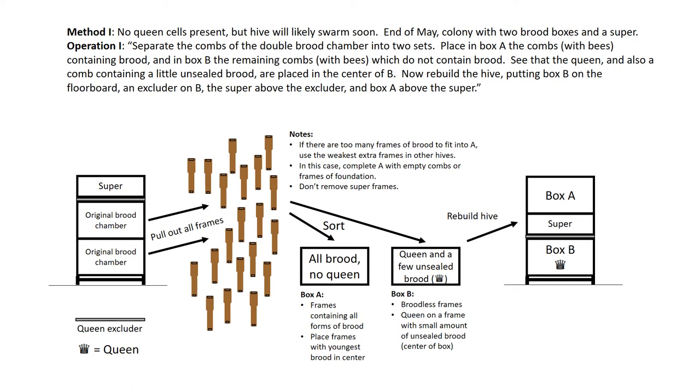Now rebuild the hive, putting Box B on the floorboard, an excluder on B, the super above the excluder, and Box A above the super.